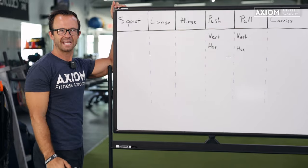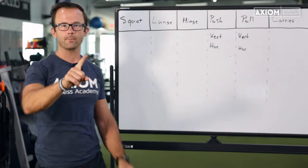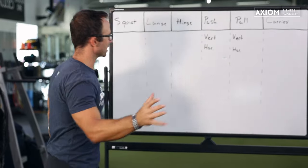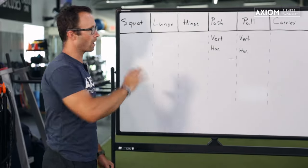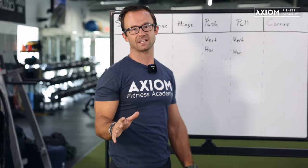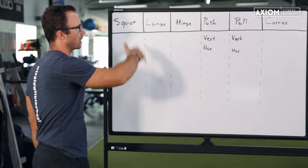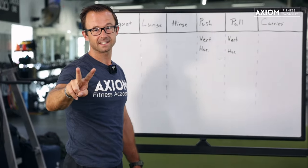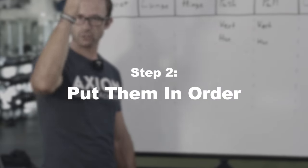Step one in this process of movement categories is to just sit down and create your own — or if you want, you can take ours and build it out so you have all the squat exercises you can think of, all the lunge, hinge, push, pull exercises listed out. Step two of this process — probably the more challenging step of the two — is to start to order them, putting them in order of difficulty.